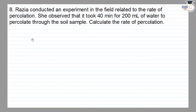Class 7, NCERT Chapter 9. The question is: Rajya conducted an experiment related to the rate of percolation. He observed that it took 40 minutes for 200 ml of water to percolate through the soil sample.